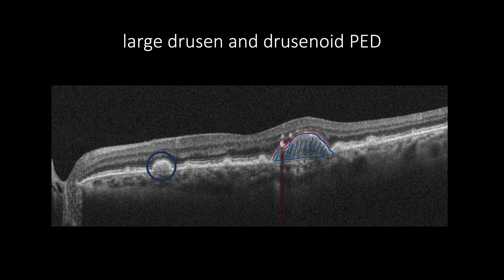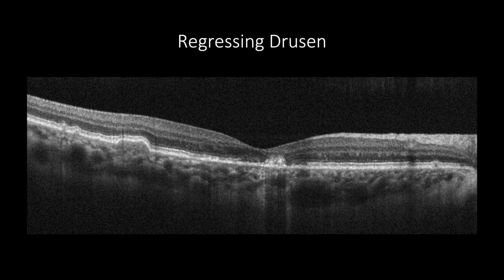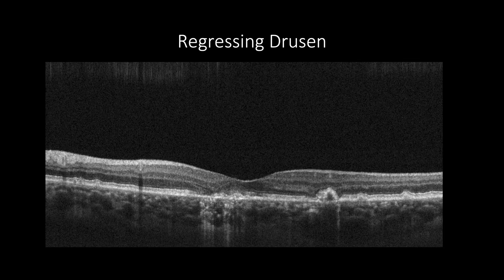In cases with early and intermediate AMD, the choroid will appear normal and within normal thickness. Drusen can appear with heterogeneous content. This is due to the regressing process of the drusen, which appears with internal hyperreflectivity when it is calcified and is usually associated with RPE atrophy. In contrast, when the drusen appear with internal hyperreflectivity, the drusen are in the regressing stage and developing RPE atrophy and calcification.